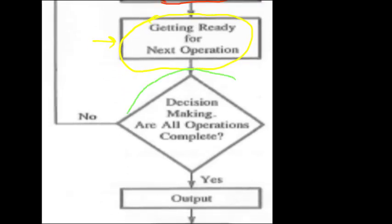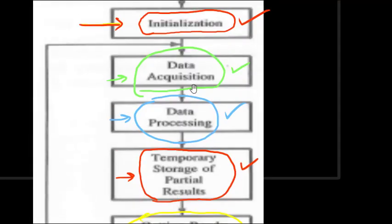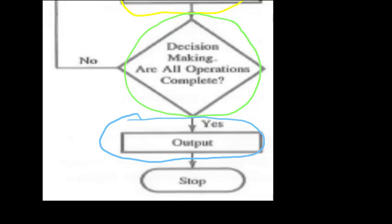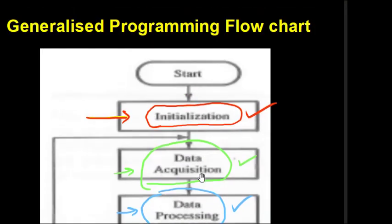The sixth block is the decision-making block — whether all operations are complete or not. If they are complete, we give the output; if not, we repeat and go back to an earlier block such as data acquisition. The final block is to display the result — sending the output to an output device, a register, or a memory location — and then halt. This is the generalized programming flowchart.